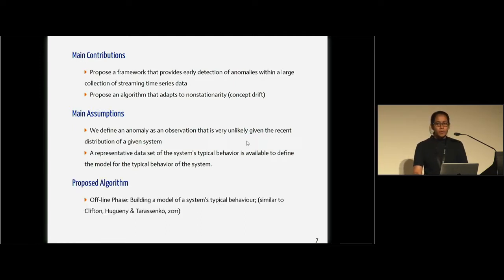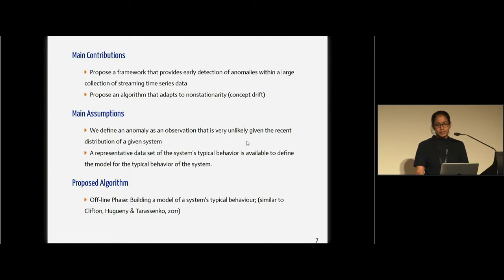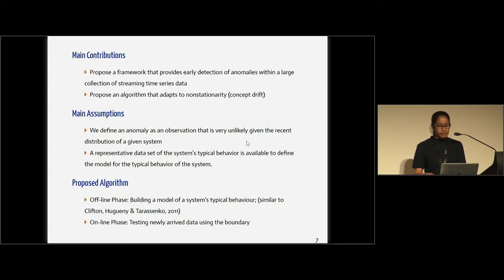I'm coming to the proposed algorithm. In this proposed algorithm, we have two main phases called the offline phase and the online phase. In the offline phase, we try to build a model for the system's typical behavior — basically, we are trying to identify an anomalous threshold. Once we identify the anomalous threshold, the online phase is activated and tests for newly arrived data.